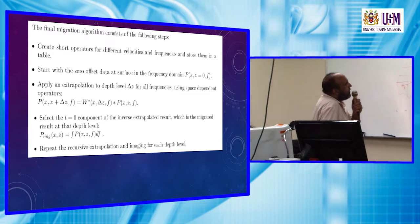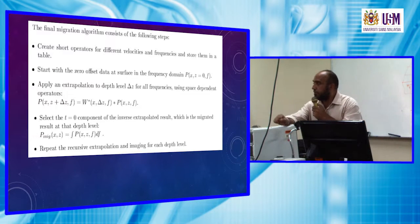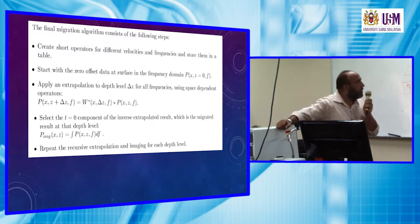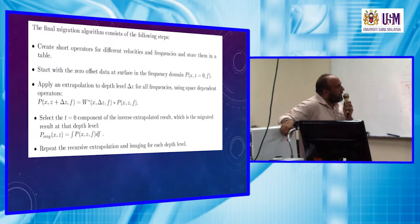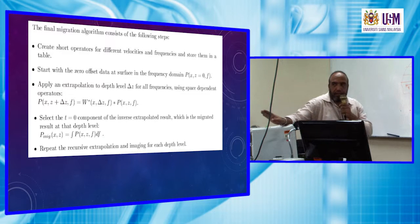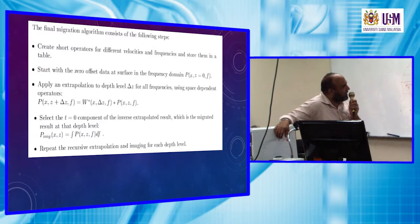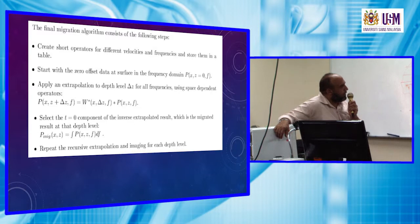The steps for recursive migration are: first, create short operators for different velocities and frequencies and store them in a table. Second, start with zero offset data at the surface in the frequency domain. Third, apply an extrapolation to depth level delta Z for all frequencies using a space-dependent operator. Then select the T equals zero component of the inverse extrapolated result, which is the migrated result at that depth level. Repeat the recursive extrapolation and imaging for each depth level.